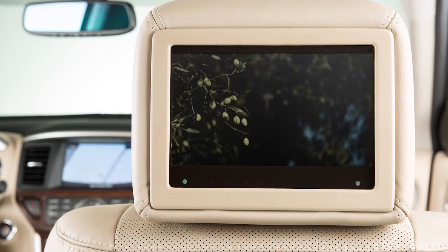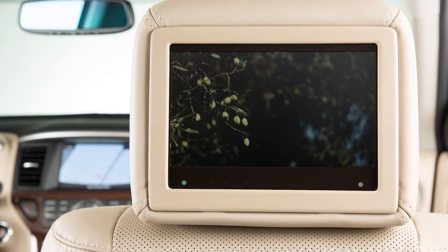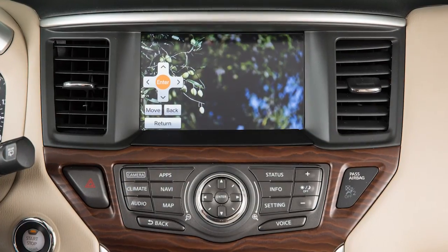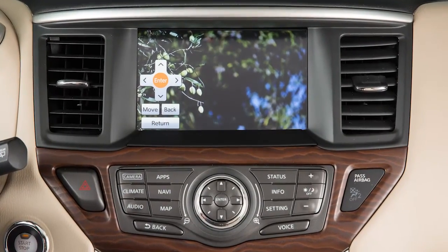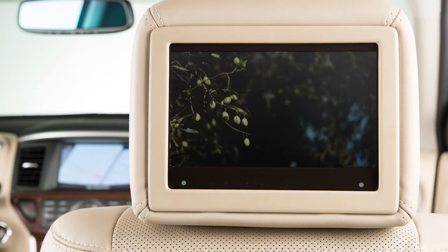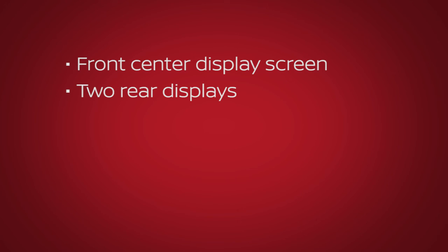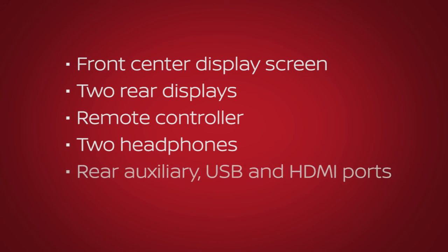If your vehicle is equipped with the mobile entertainment system, you and your passengers can enjoy up to three different audio or video sources at the same time. The system components are the front center display screen, the two rear displays on the back of the front head restraints, a remote controller, two headphones, and the rear auxiliary USB and HDMI ports on the back of the center console.